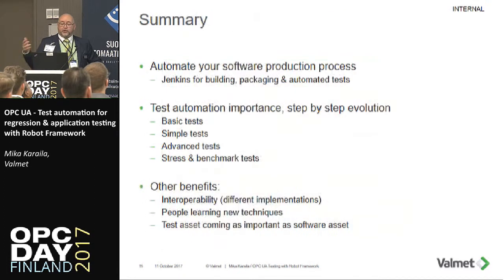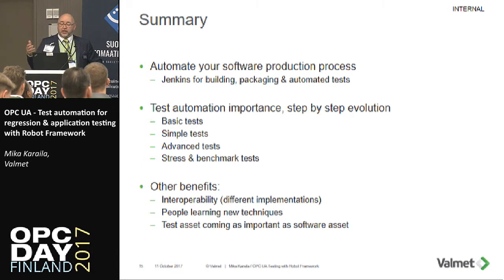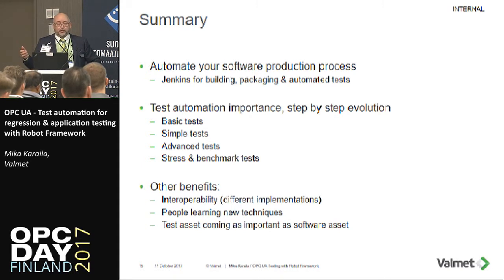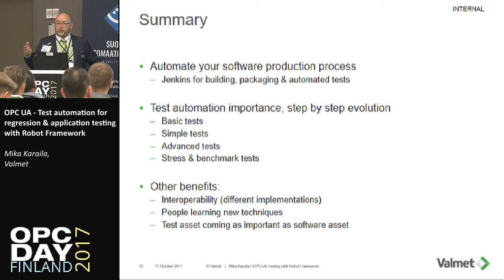As a summary: it's good to automate your software production process. Jenkins can be used to build, package, and automate these tests. We have implemented basic tests, some simple tests, and now some advanced tests that also test events. We have some test cases to stress and benchmark our OPC UA server and client. The other benefits include interoperability — we have C# programs that can access our server, a Java client, and this Python client used in test cases to test the OPC UA server. The test asset becomes as important as your software asset, because with it you can always validate that your software is built correctly, runs correctly, and still has the same features as the earlier version.